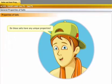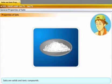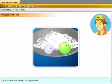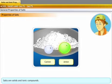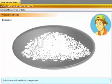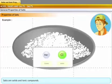Do these salts have any unique properties? Salts are mostly solids and are ionic compounds. Every salt has a positively charged cation and negatively charged anion. For example, sodium chloride is made of sodium ions and chloride ions.